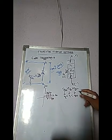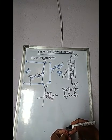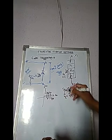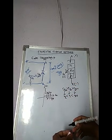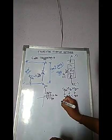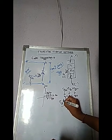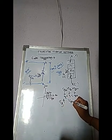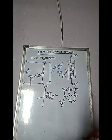The forward breakover voltage depends on the gate current magnitude. Higher the gate current, lower is the forward breakover voltage.